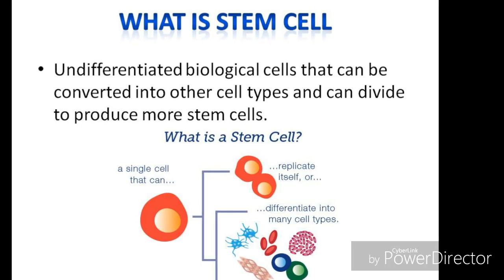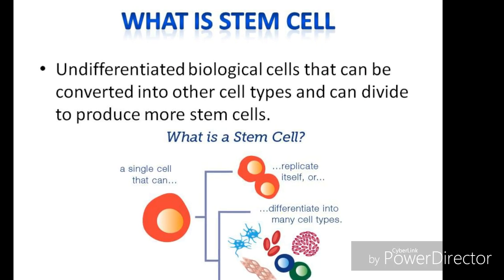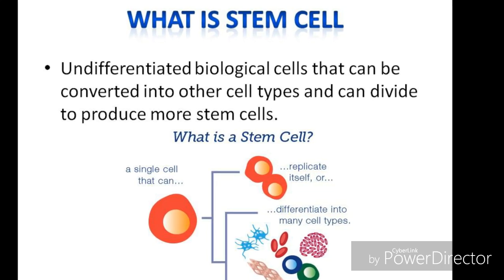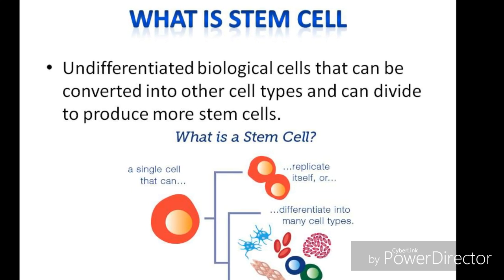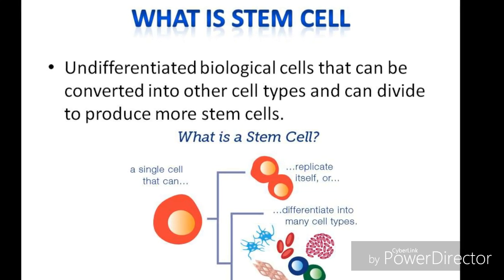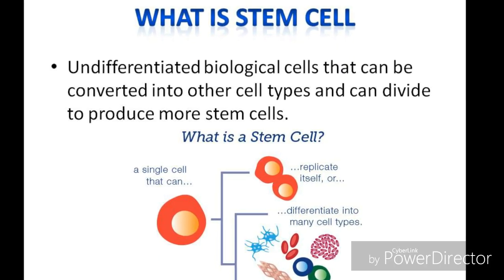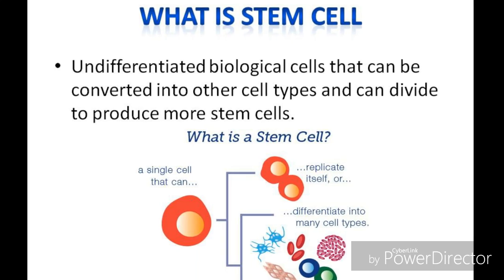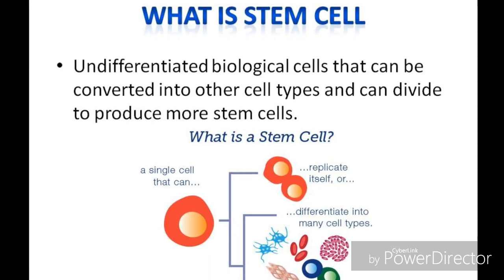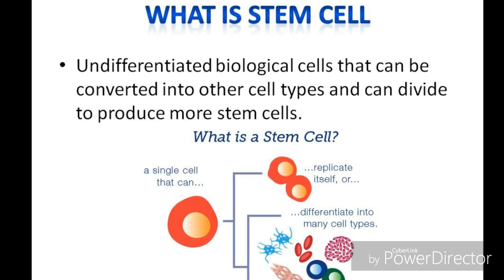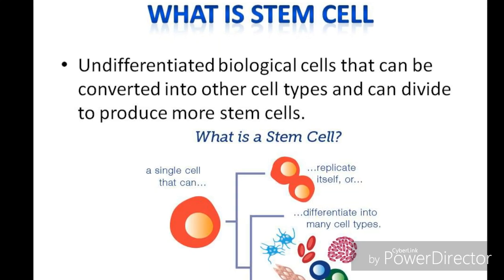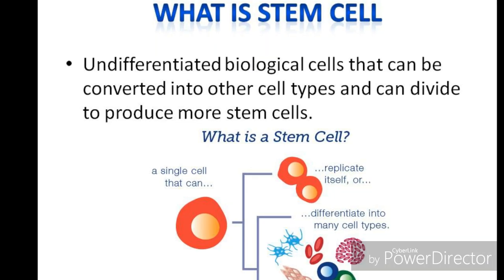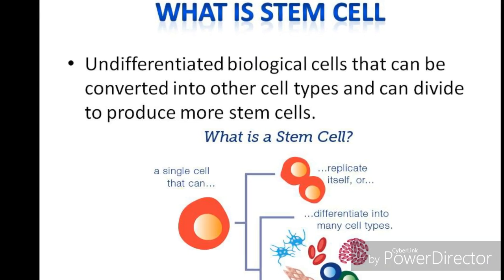Undifferentiated cells are cells which are not assigned to a particular function, whereas differentiated cells are assigned to a particular function. As you can see in the diagram, stem cells have the property to replicate themselves — they can renew and divide into similar cell types, or differentiate to form various cells like fat cells, muscle cells, blood cells, and nerve cells.